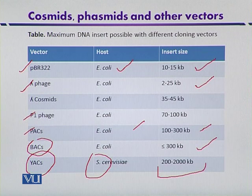So this is the comparison of different cloning vectors that can be used to clone different fragments of DNA that are variable in their sizes.